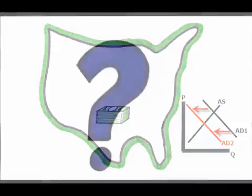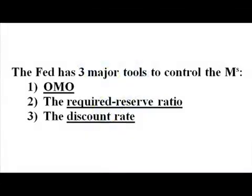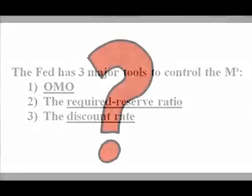The question now is: how does the Fed control or make changes to the money supply? The Fed has three major tools: one, open market operations or OMOs; two, the required reserve ratio; and three, the discount rate. How does each of these work, and which tool does the Fed prefer? Let's take them one at a time.